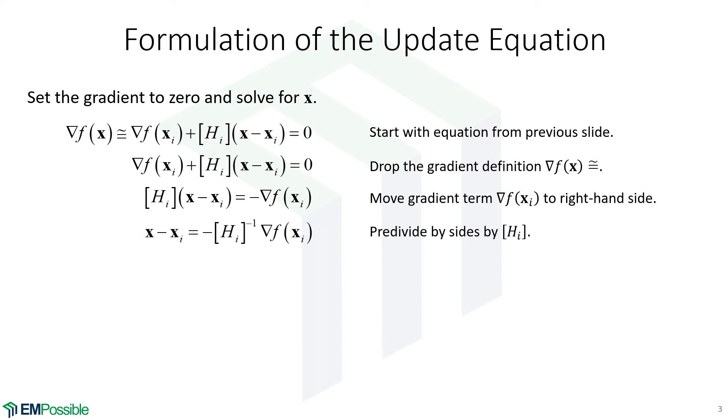We then pre-divide both sides by the Hessian. So really, we're taking this Hessian matrix and moving it over to the right-hand side of the equation. Now we'll take this x_i term, move it over to the left, and we've solved the equation for x.